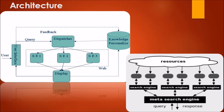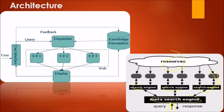This is the architecture of a meta search engine. There are various resources from which we query. The query is fired, then we have a meta search engine coordinating different search engines. All these search engines work with the available resources, find the most relevant data and information, and the meta search engine combines them.